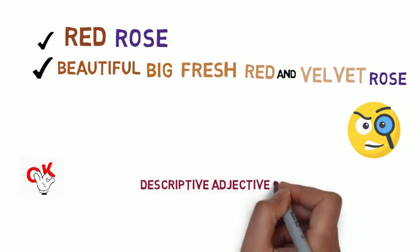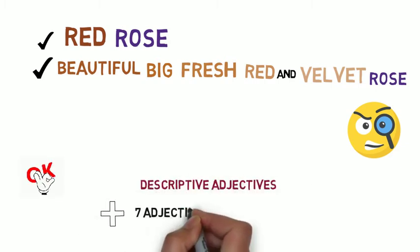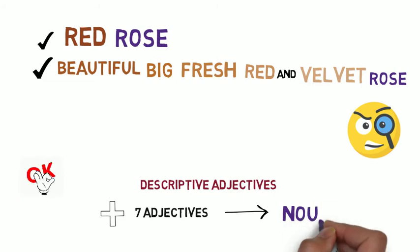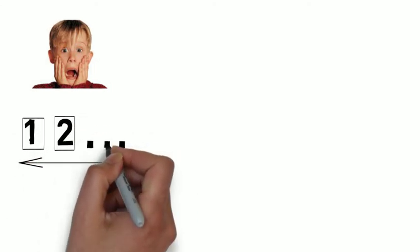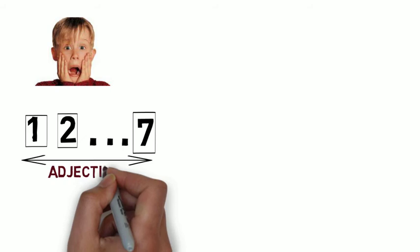With descriptive adjectives, you can add up to seven adjectives before a noun. Really? Yes, definitely. All you have to do is to respect the order of their appearance and occurrence before the noun they describe.